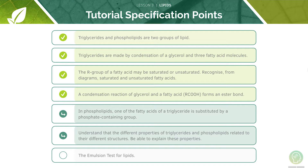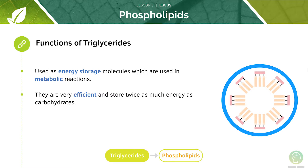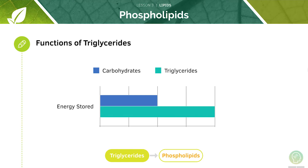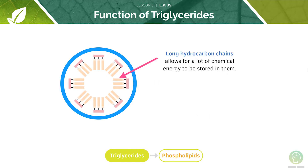Our next points will cover phospholipids in more detail. Triglycerides are primarily used as energy storage molecules. During metabolic processes such as respiration, the fatty acid chains of triglycerides can be broken down in order to release very large amounts of stored chemical energy. They are very efficient and store twice as much energy as carbohydrates. The hydrophobic fatty acid chains arrange themselves to hide away from water, so triglycerides don't affect the osmotic potential of cells and do not cause swelling due to the influx of water. The long hydrocarbon chains in the fatty acids allow for a lot of chemical energy to be stored in them.